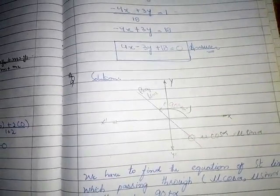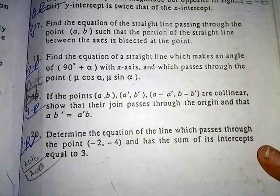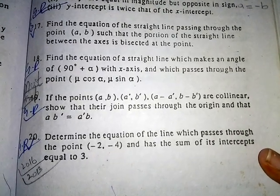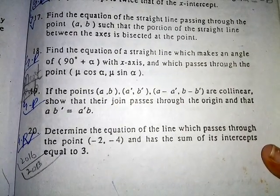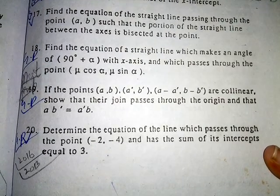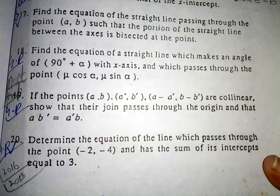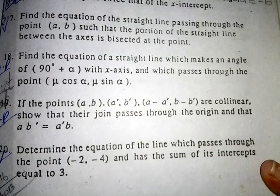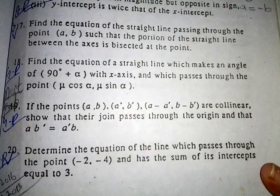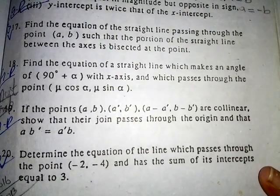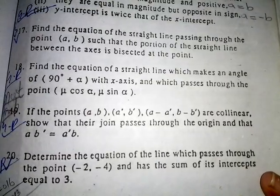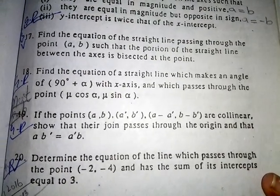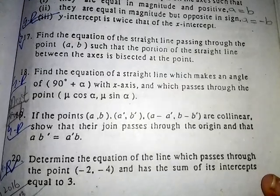Now we solve question 18. Find the equation of a straight line which makes an angle of (90° + α) with the x-axis and which passes through the point (μcosα, μsinα). We have to find the equation of the straight line which makes this angle with the x-axis and passes through that point.